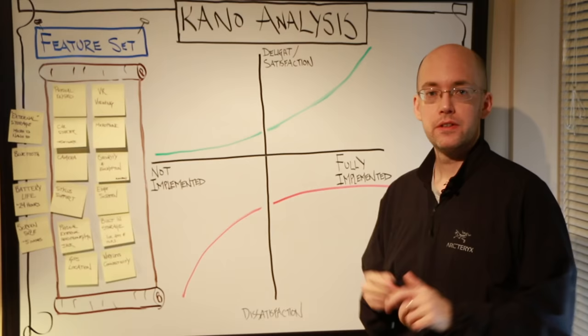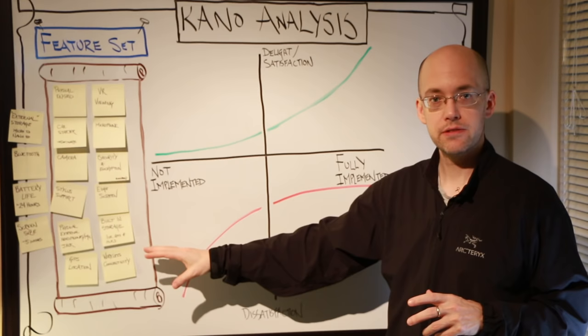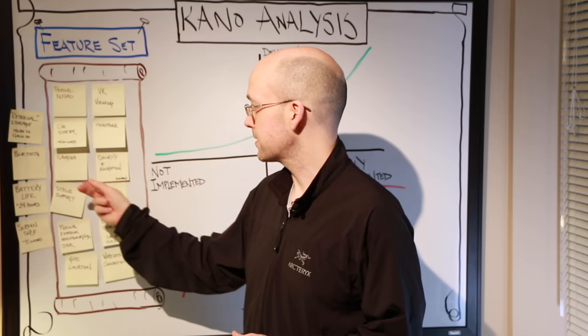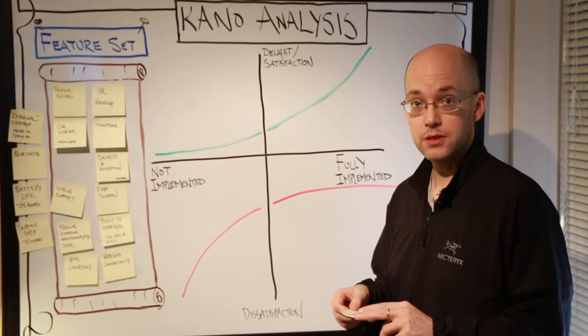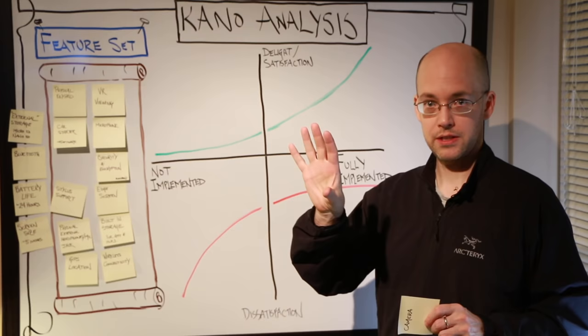So for this part of the video, I'd like to go through the feature set that we've identified and map them into the Kano analysis. So let's start with something that is pretty obvious: smartphones nowadays, if they don't have a camera, then we can expect a large level of dissatisfaction from our users because now smartphones have both a front facing camera and a back facing camera.